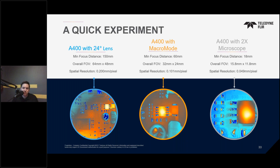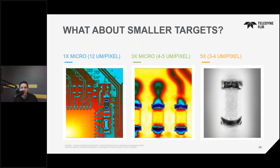But what if you had even smaller components to test? Here are three examples of what's achievable with a high-performance, high-definition cooled infrared camera system paired with infrared microscope lenses. On the leftmost image, we attain about 12 micron per pixel with a 1x microscope lens — a gorgeous image. Not only can we get better spatial resolution, but the imagery is much more crisp versus the uncooled camera because of the increased sensitivity of the cryo-cooled detector. In the middle, we have about four to five micron per pixel with our 3x lens. And finally, on the right, we achieve about three to four micron per pixel with our new 5x microscope lens.